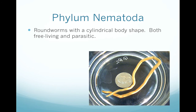Phylum Nematoda are the roundworms. They tend to be cylindrical in shape, almost like spaghetti. There are some free-living ones, but the most common are the parasitic ones — when you see roundworms in puppies or kittens, that's phylum Nematoda. You can see in the picture the size of a parasitic roundworm compared to a quarter.